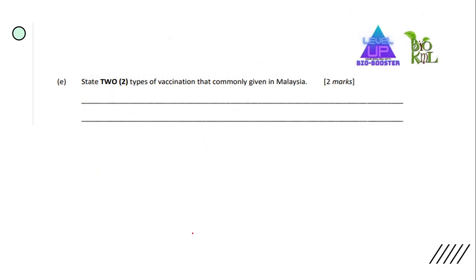State two types of vaccination commonly given in Malaysia. You can give two answers only, such as BCG, rubella, or HPV. Choose any two.